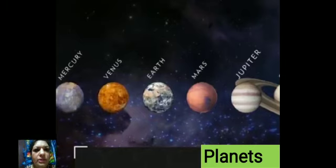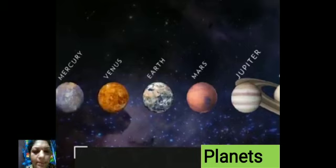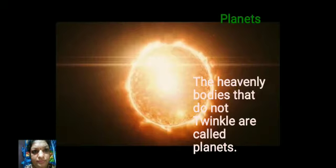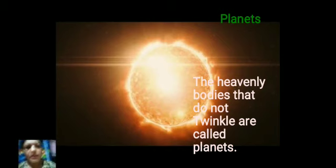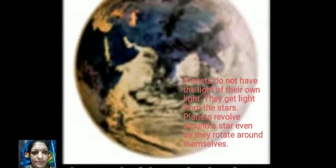You can see some planets here: Mercury, Venus, Earth, Mars, Jupiter, Saturn, Uranus — these are the planets. What are planets? Planets do not have their own light; they receive light from the Sun. These are the heavenly bodies that do not twinkle, and they are called planets.